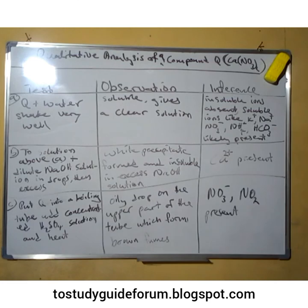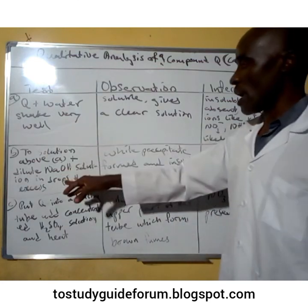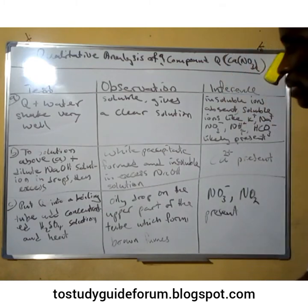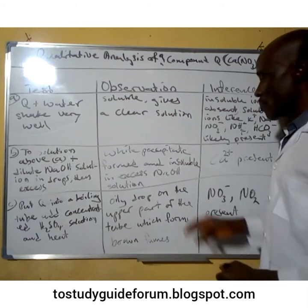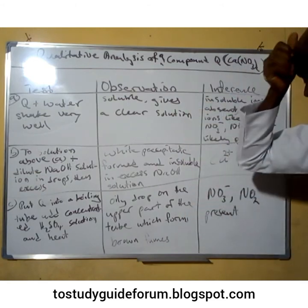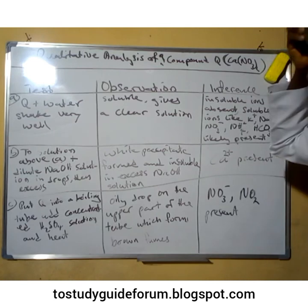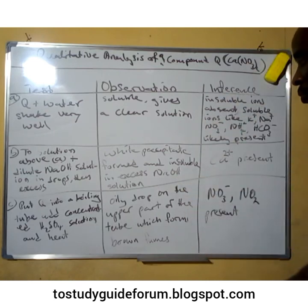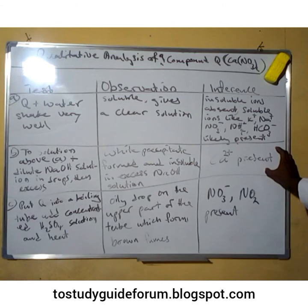Next, to the solution from the bowl we add dilute sodium hydroxide solution dropwise. In observation, we have white precipitates formed, and those white precipitates are insoluble in excess of dilute sodium hydroxide solution. This confirms that calcium ion is present.